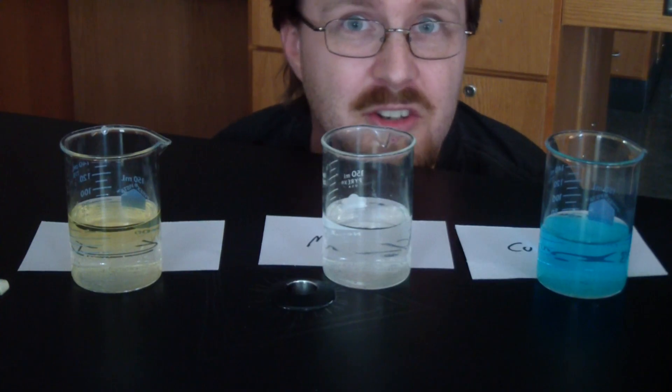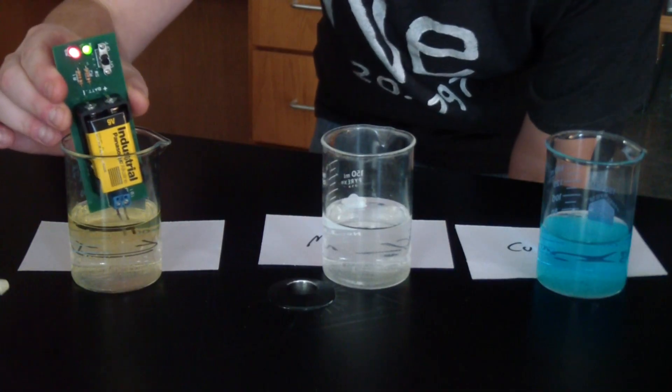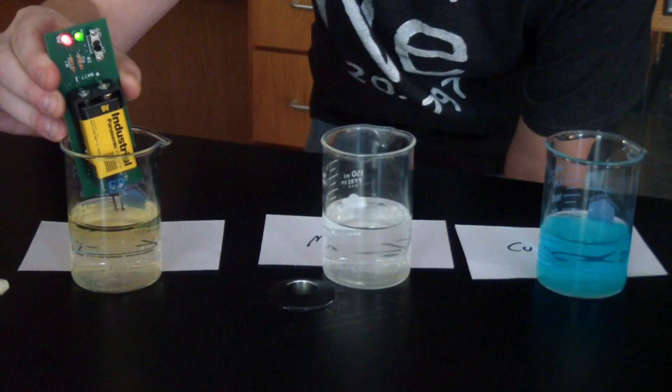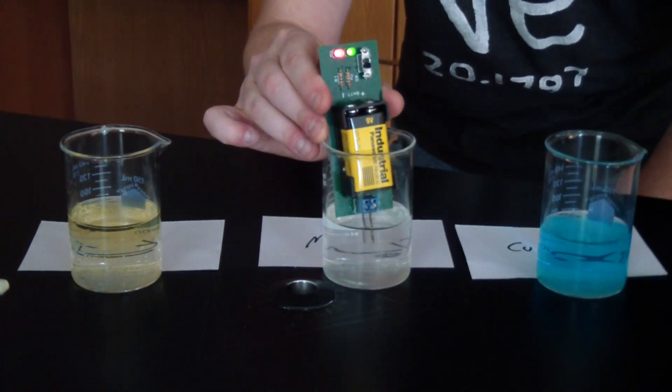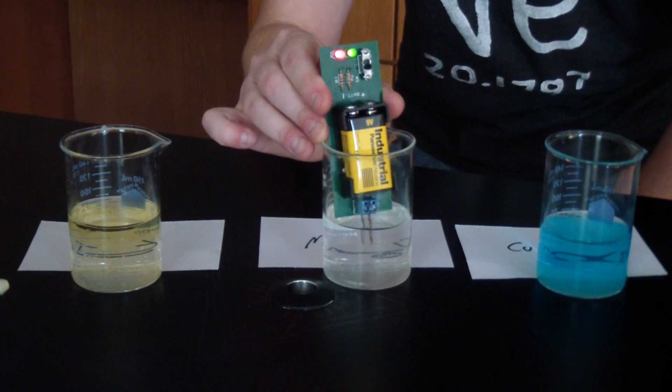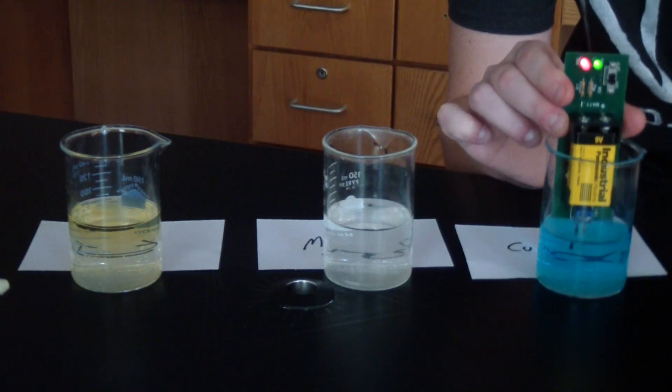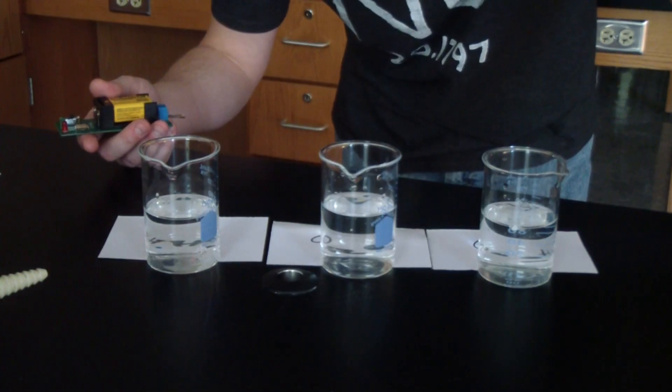So this is an ionic compound called potassium iodide, and you can clearly see the lights are coming on. So this does conduct electricity. This is magnesium chloride, also an ionic compound, and it conducts electricity. Here is another ionic compound called copper nitrate, also clearly conducts electricity. But what about the covalent compounds?